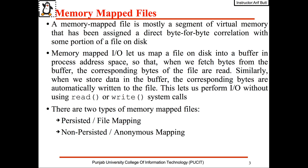A memory map file is mostly a segment of virtual memory that has been assigned a direct byte-for-byte correlation with some portion of a file on disk. Memory-mapped IO lets us map a file on disk into a buffer in process address space so that when we fetch bytes from the buffer the corresponding bytes of the file are read. Similarly, when we store data in the buffer the corresponding bytes are automatically written to the file, letting us perform IO without using the read or write system calls.